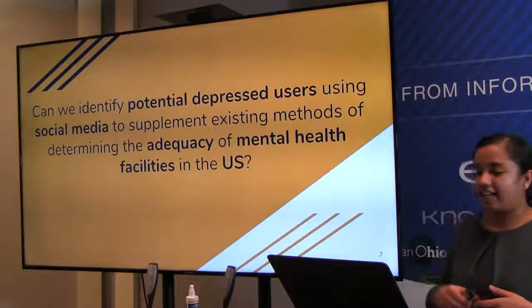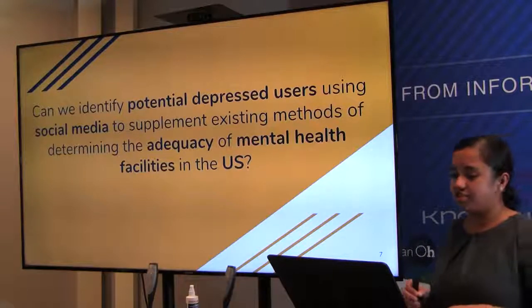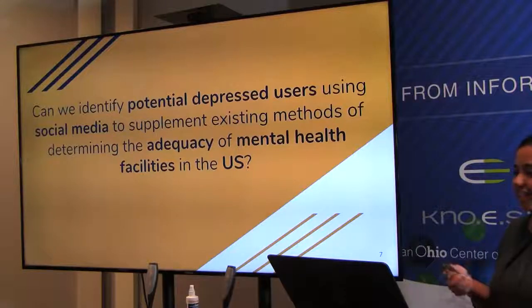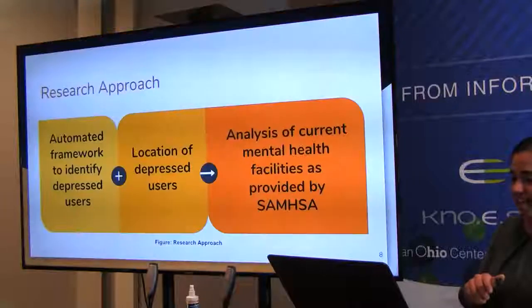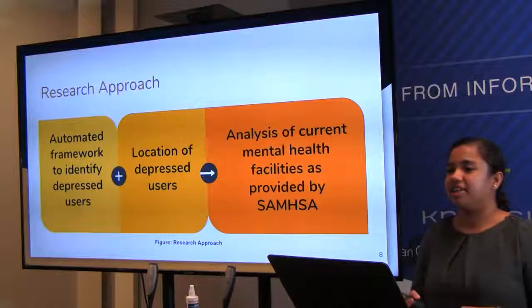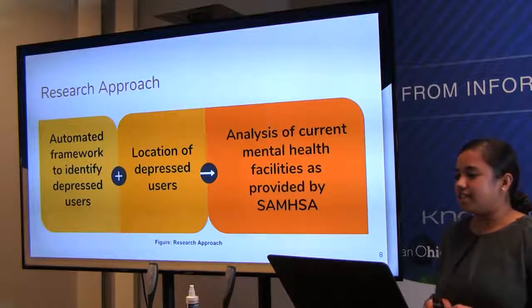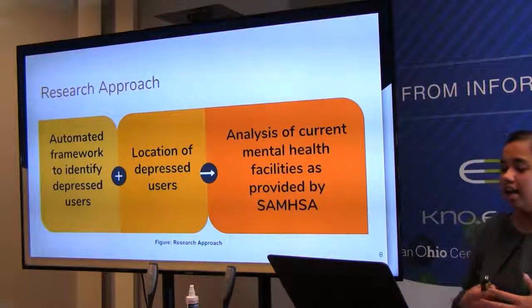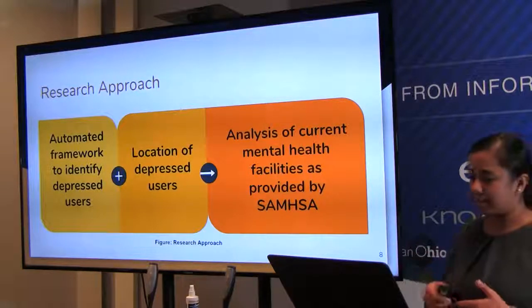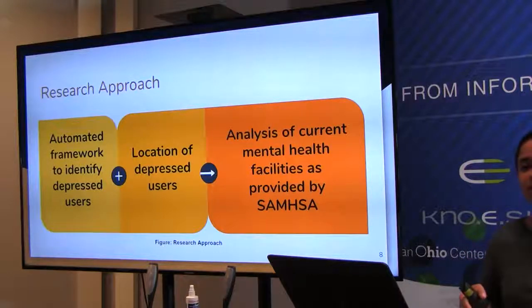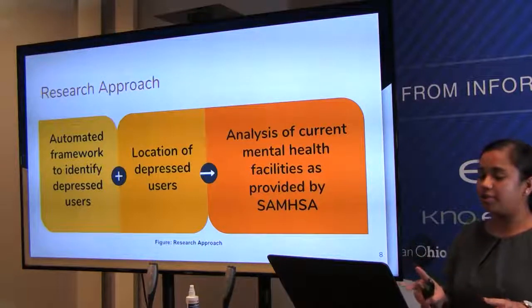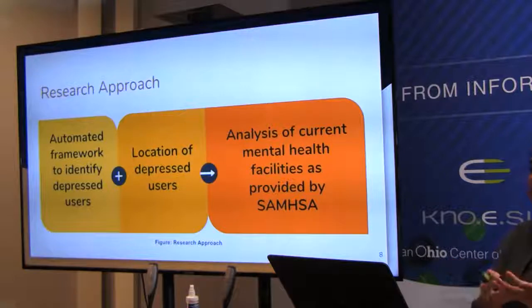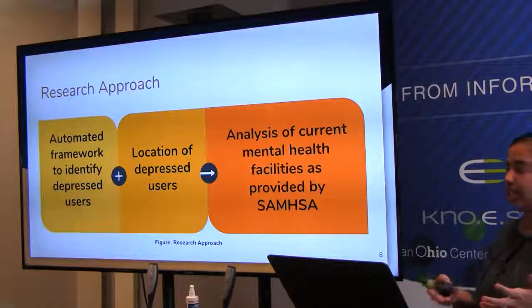This leads to my research question: can we identify potentially depressed users using social media to supplement existing methods of determining the adequacy of mental health facilities in the U.S.? The research question breaks down into two areas: first, identifying users that are depressed by developing a framework to automatically identify them using social media and Twitter; and second, determining the location of depressed users. Combining these, we can see where mental health facilities are and where depressed users are, and identify mismatches between the two.